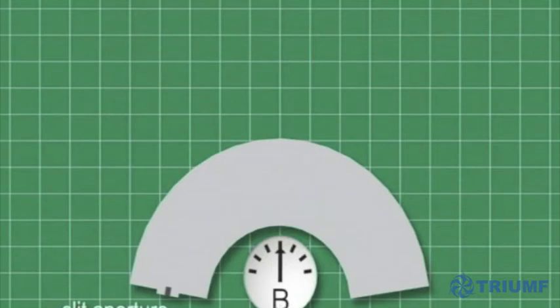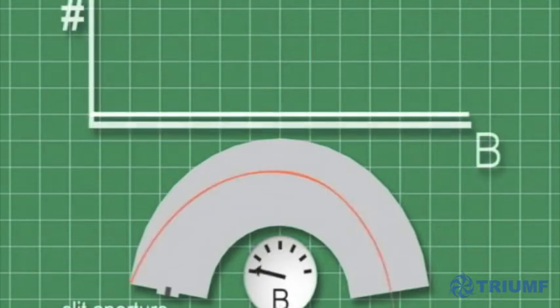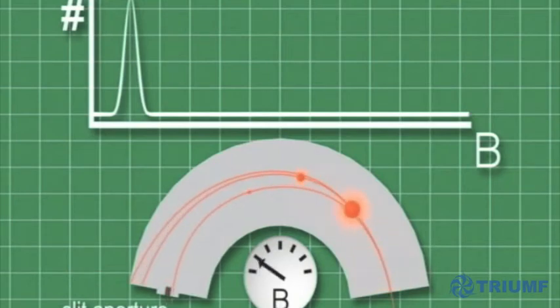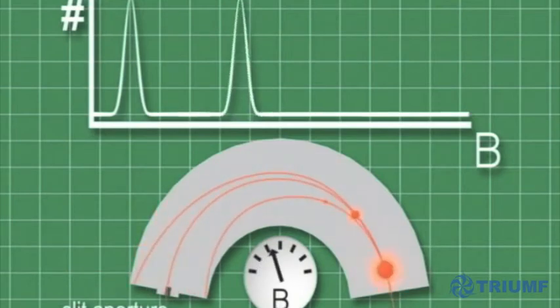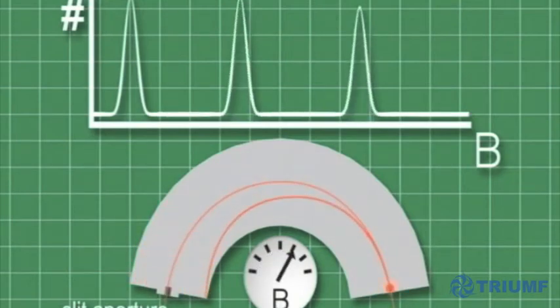To illustrate how this works, let's gradually increase the magnetic field and count the number of ions that exit the magnet. We see that sometimes there are few or no ions coming out, however, at particular fields we get a lot. This indicates that we have separated out a particular ion from the stream. This system is called a mass separator.